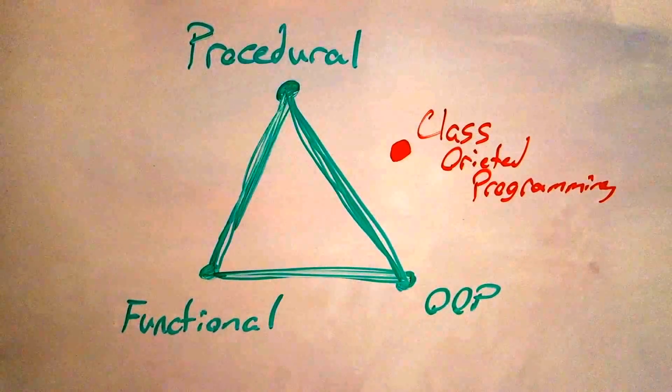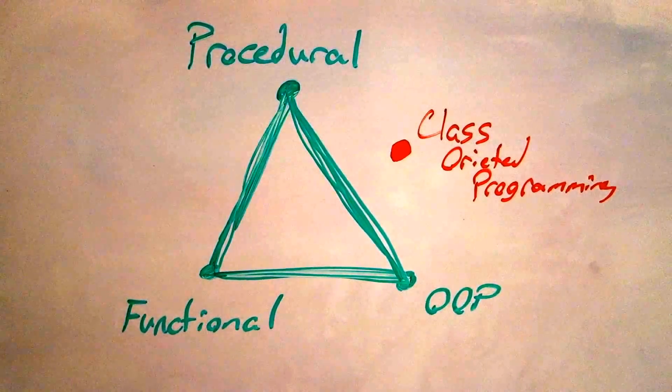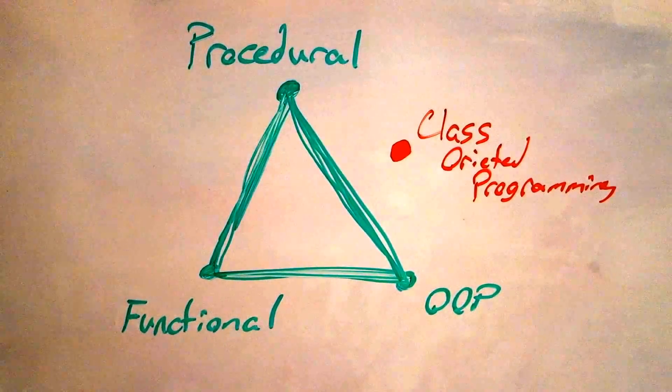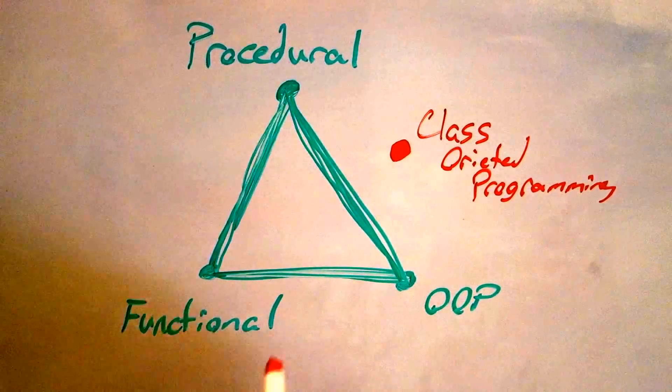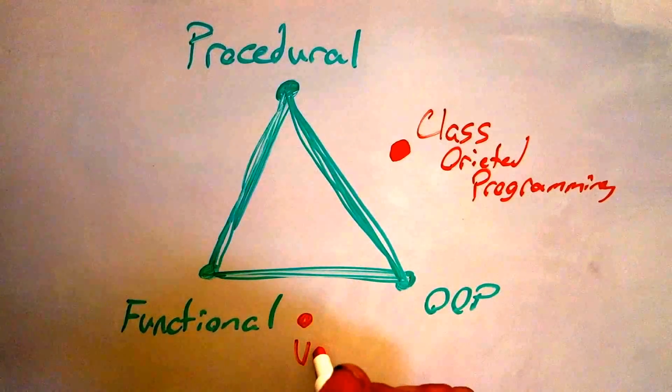But we can do the same thing if we encapsulate state, but only ever translate it, never manipulating it. We would wind up with a weird hybrid of object oriented and functional programming. We could call that value oriented programming.